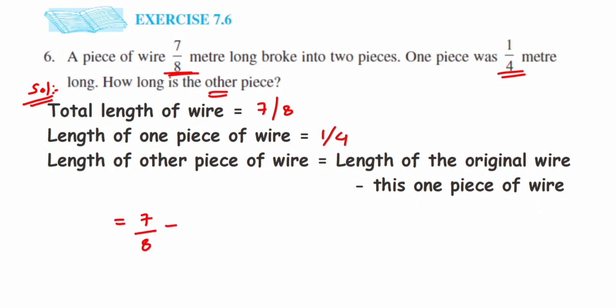So it's 7/8 minus 1/4. We cannot solve this because the denominators are different, so we're going to take the LCM of 8 and 4, which is 8. We have to make them like fractions.